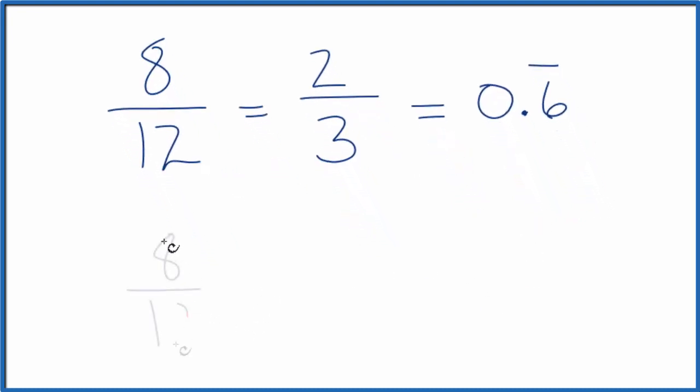We could also take 8 twelfths and multiply that by 1, but instead of 1, let's choose something like 2 over 2, because 2 divided by 2, that's still 1.